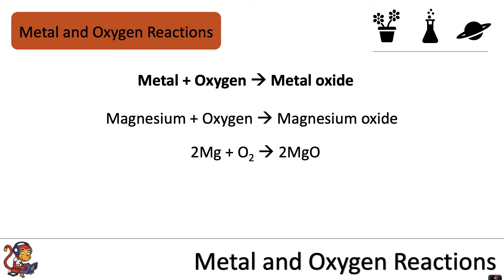Very well done if you got that magnesium reacting with oxygen makes magnesium oxide, and the symbol equation is 2Mg plus O2 makes 2MgO.